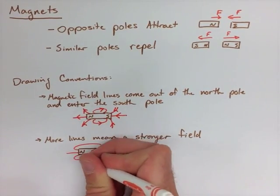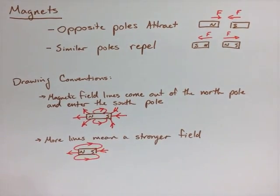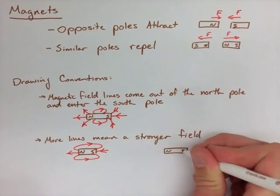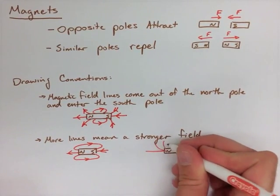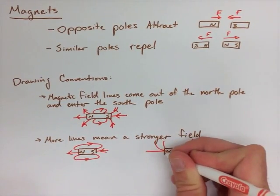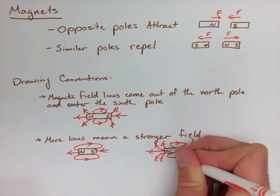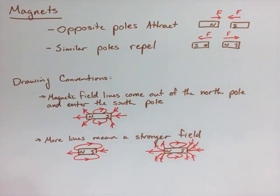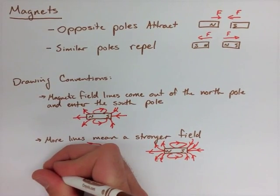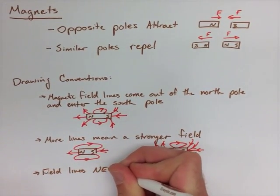And the last rule we're going to look at is again that field lines can never cross. We can never have field lines crossing each other. And this is the same as when we look at an electric field. So really, you just have to remember that the field lines here go from north to south. And other than that, they behave very similarly to an electric field line.